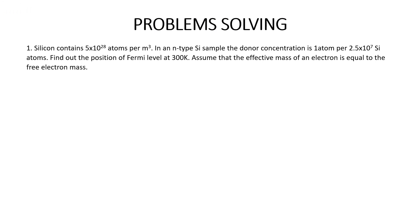Let us read the problem. Silicon contains 5 into 10 power 28 atoms per meter cube. In an n-type silicon sample, the donor concentration is 1 atom per 2.5 into 10 power 7 silicon atoms. Find out the position of Fermi level at 300 Kelvin.